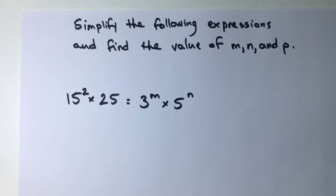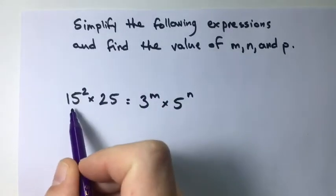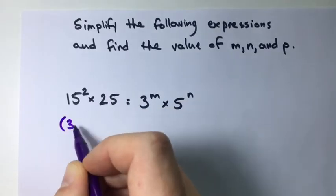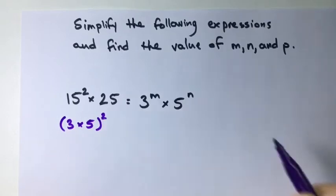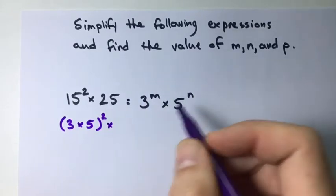So what we want to do first, let's go ahead and break up our 15 squared. We know 15 is equal to 3 times 5, and we can bring down our squared. We also know that 25 is equal to 5 squared.